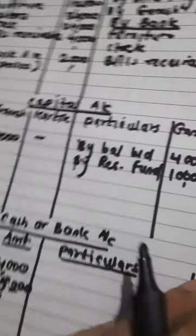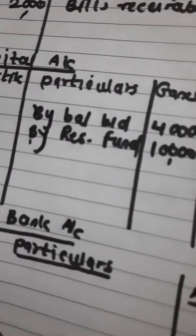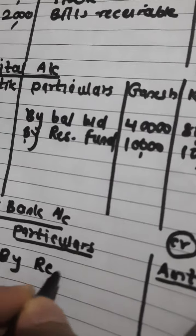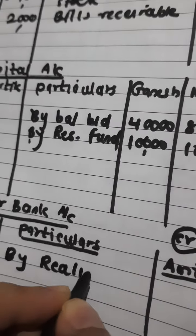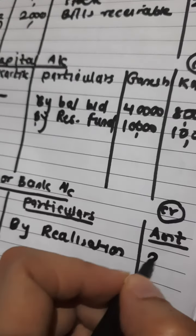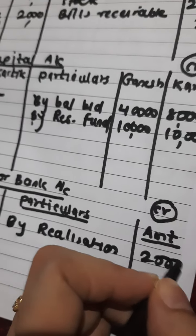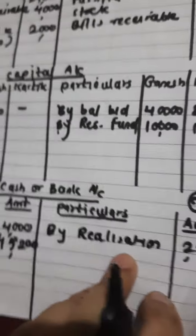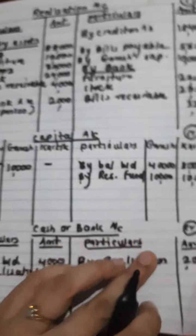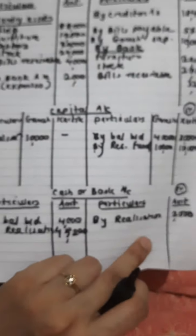So my effect is: Realization, Bank credit. By Realization — amount is 2,000. Like this, my posting is almost done.